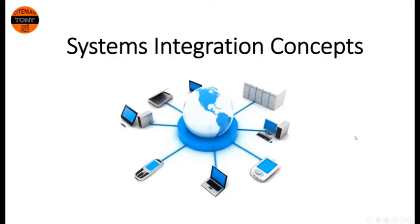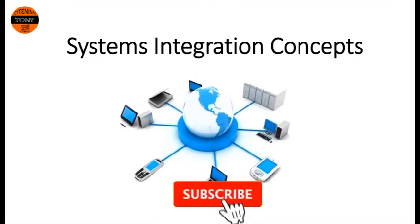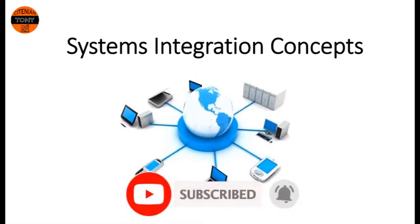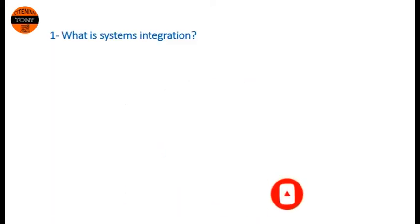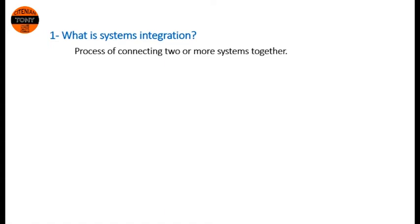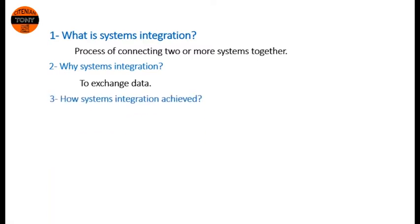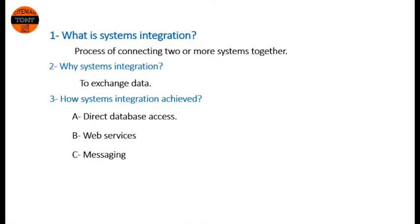Good evening. Today we will talk about systems integration concepts. Before we go ahead, let's answer some important questions. What is system integration? It is the process of connecting two or more systems together. Why system integration? We need system integration mainly to exchange data between two or more systems. How is system integration achieved? It is achieved by direct database access, web services, or messaging. We will cover each of these points later.